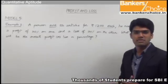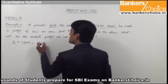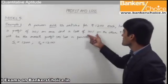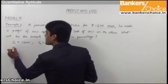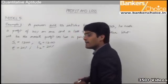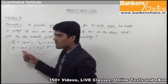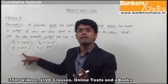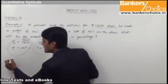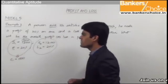SP1 = Rs. 1200 and SP2 = Rs. 1200. Profit on the first article = 20%, so SP = 120% of CP. Since 120% = 1200, the cost price CP1 = Rs. 1000. For the second article, loss = 20%, so SP = 80% of CP. Since 80% = 1200, cost price CP2 = Rs. 1500.